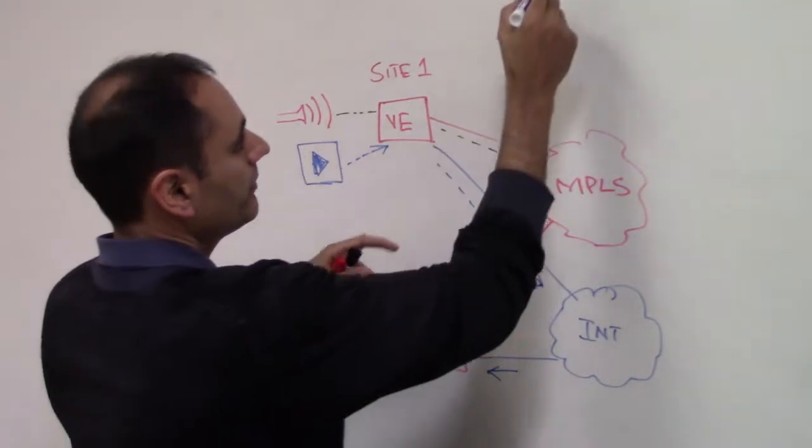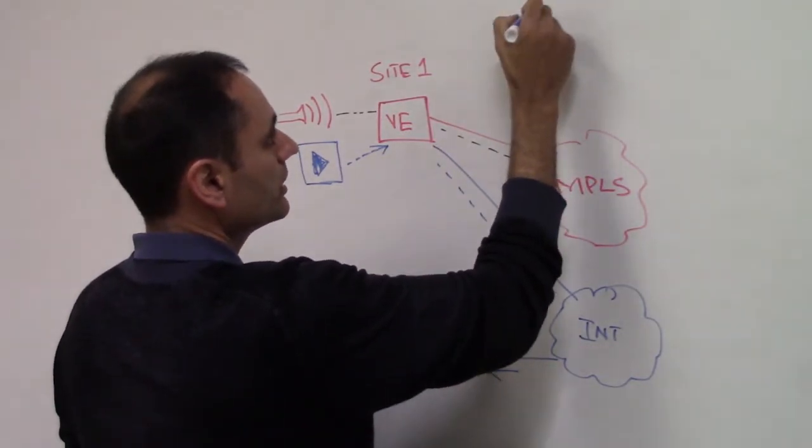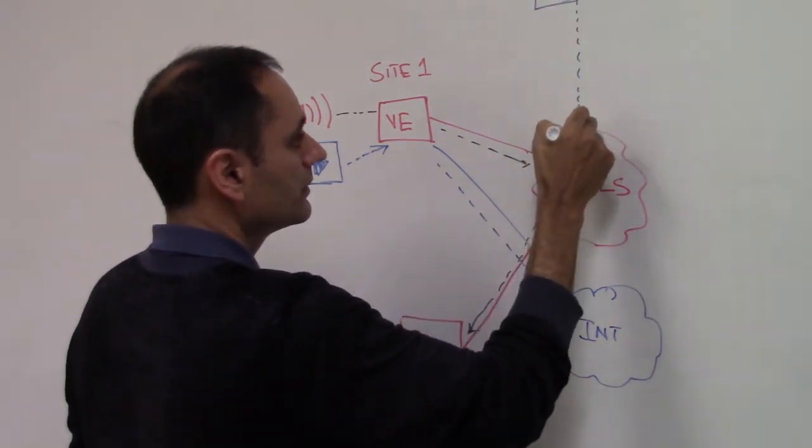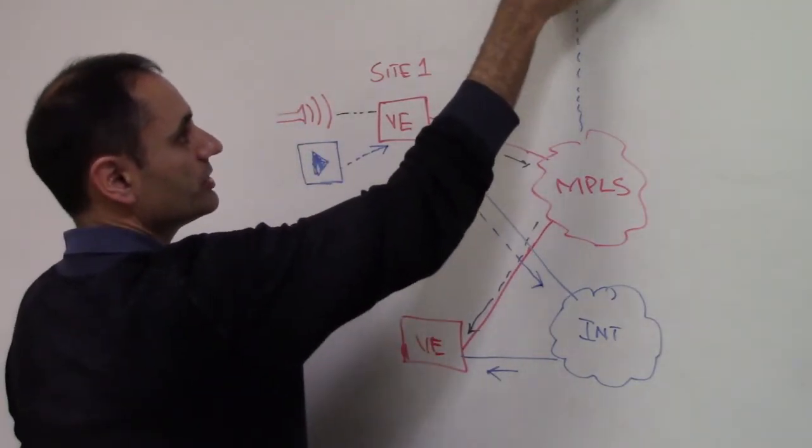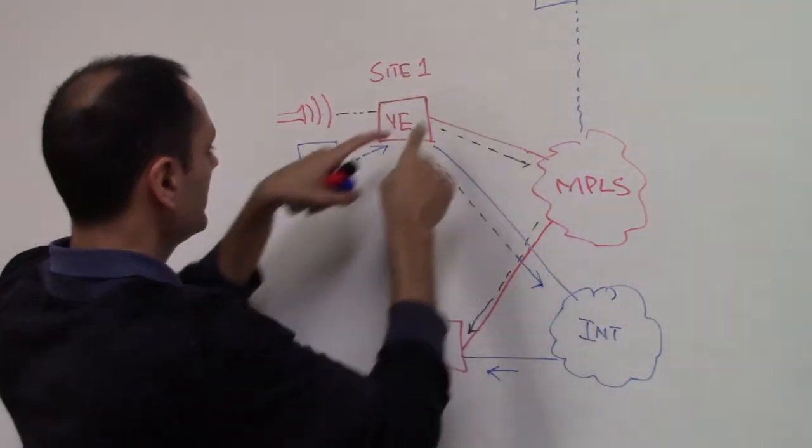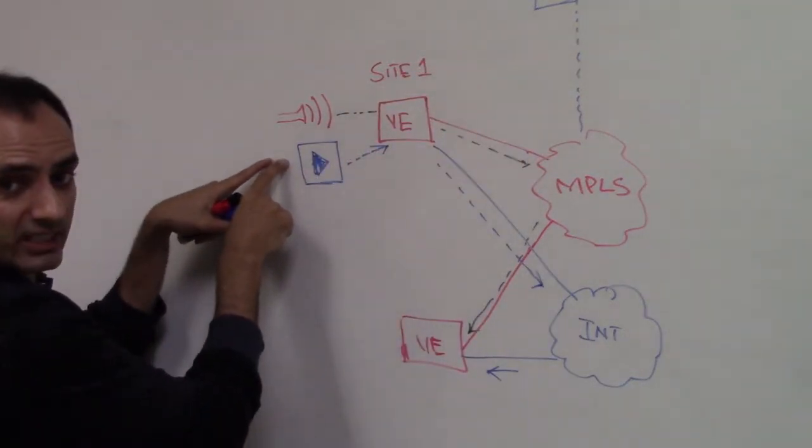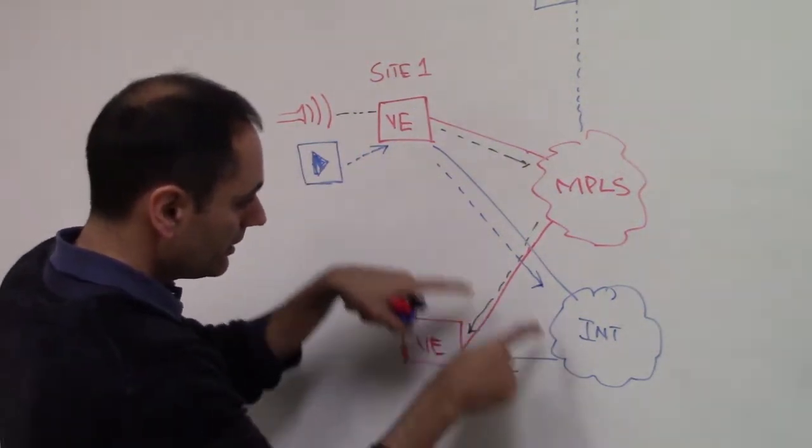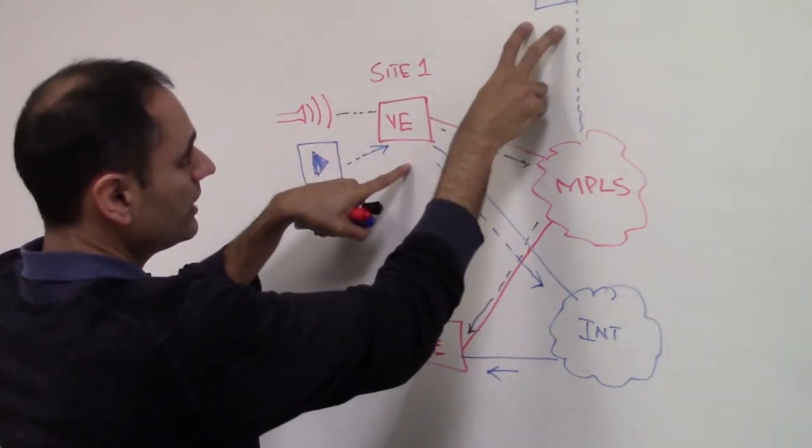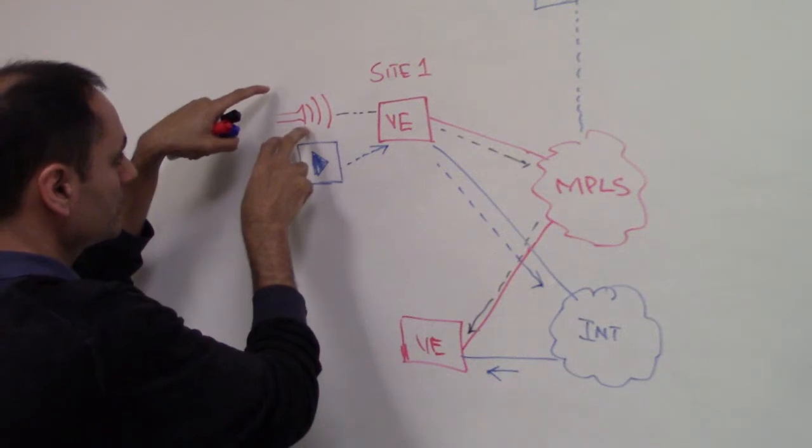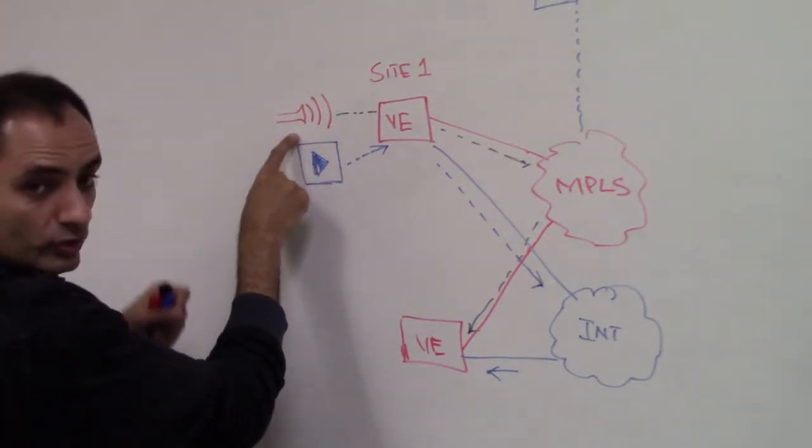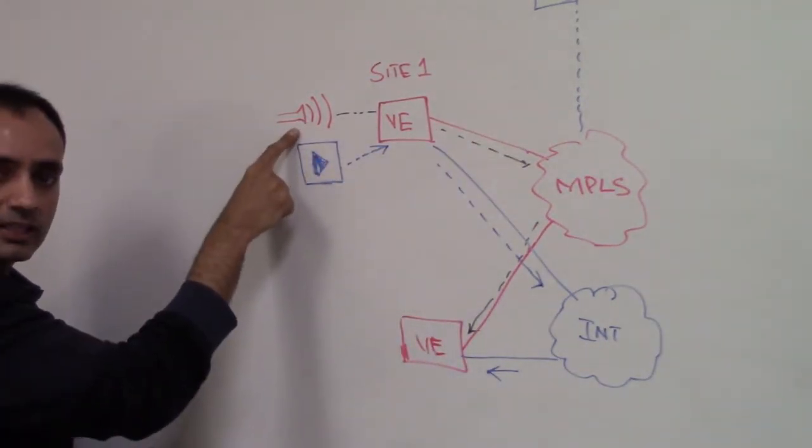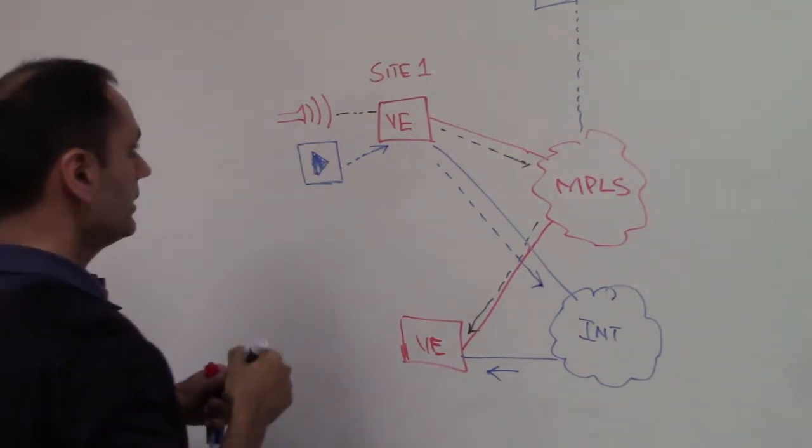This is all done by applying a policy at the central controller which is the V-Smart. You apply a central policy on V-Smart. You make sure that certain traffic, which in this case is video, is steered onto the transport which is broadband internet between these two sites. You also have to make sure that certain other applications, in this case which is voice, stays on the transport which meets a certain SLA requirement which is required for this application.